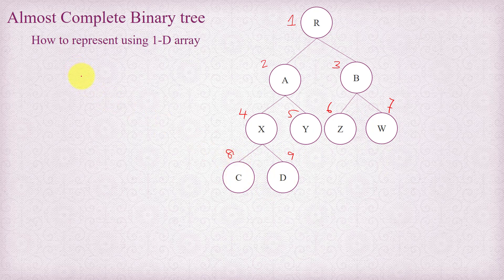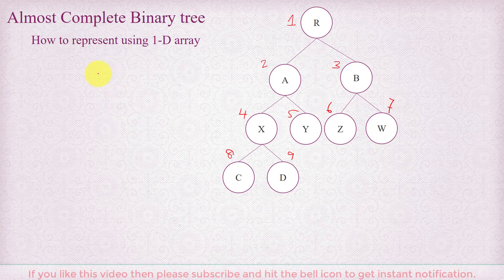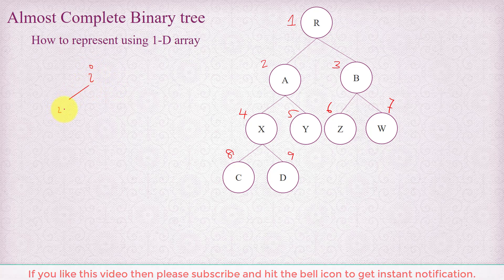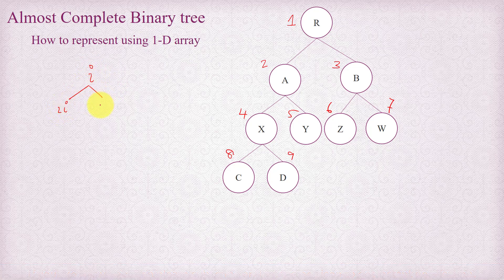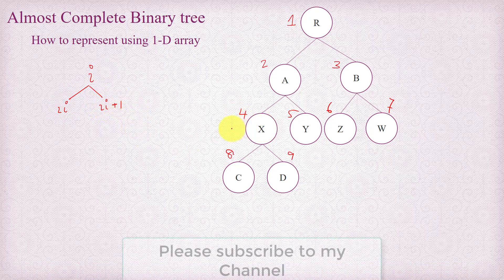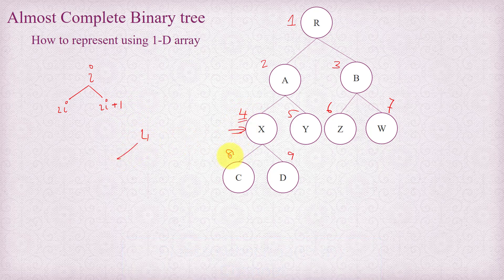Now if you number each of these nodes level by level in increasing order left to right, starting with 1 for the root node, then it turns out that for any node with number i, you'll find the left child at 2 times i, and you'll find the right child at 2 times i plus 1. For example, for node x with number 4, you find its left child at 8, that's 2 times 4, and the right child at 9, that's 2 times 4 plus 1. This is true for any of the nodes.